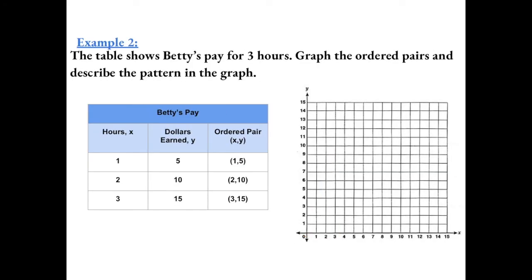Example 2: The table shows Betty's pay for 3 hours. Graph the ordered pairs and describe the pattern in the graph. For every 1 hour, she earns $5. So our first ordered pair is (1, 5).